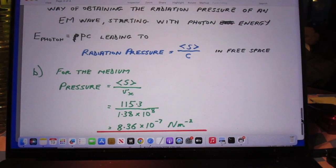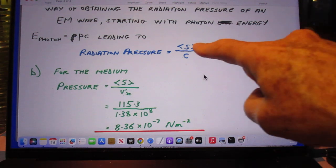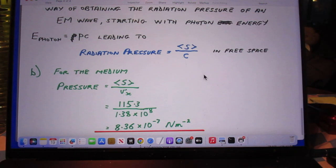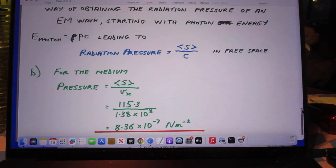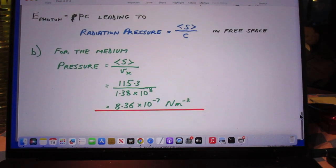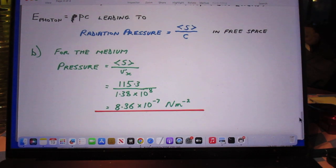And the energy is the momentum P times C. And that leads then to the radiation pressure, the mean value of the Poynting vector divided by C. And for the medium, he carries the math a little bit further, 8.36 times 10 to the minus 7 newtons per square meter.